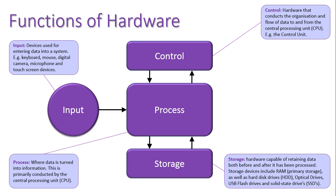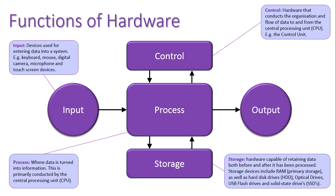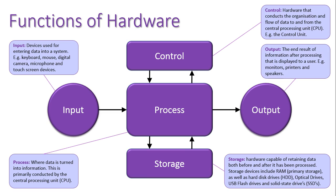When data is in the form of information after it is processed, it is then outputted and displayed via a monitor, a printer, a speaker, or a digital projector. I hope this gives you a good understanding of the five functions of hardware and basically how hardware is classified into these different groups, all responsible for different areas of data and information flowing through a system.